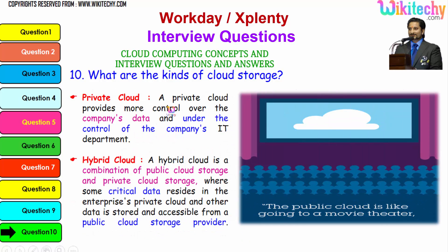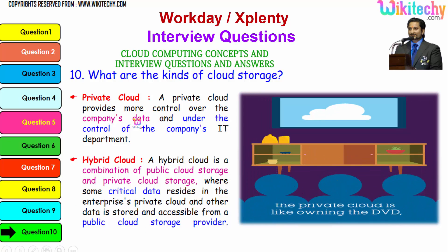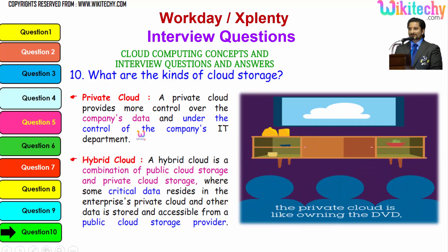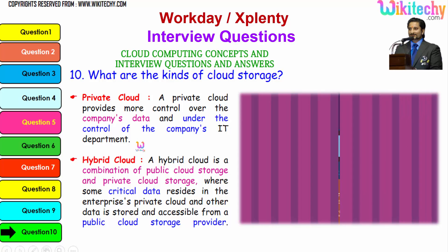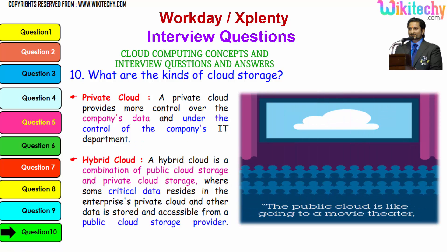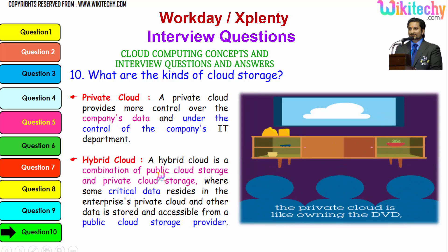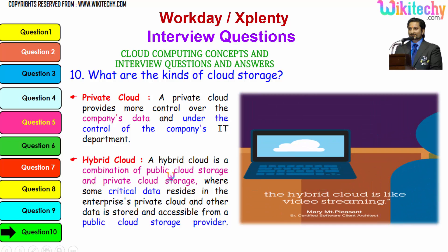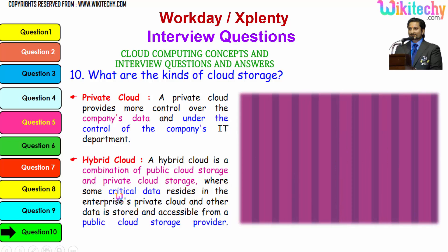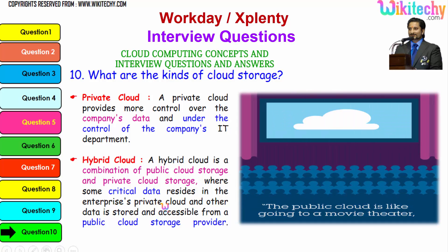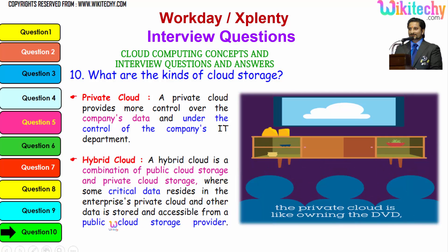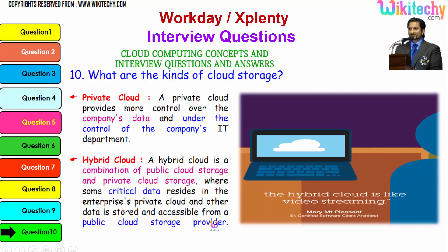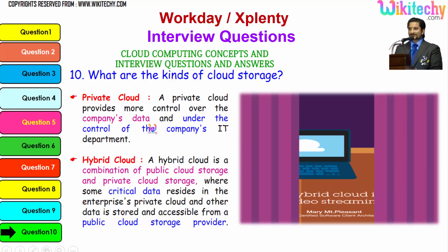A private cloud provides more control over the company's data and is under the control of the company's IT department — it's really private to you. Private cloud is like owning a DVD at home. A hybrid cloud is a combination of public and private cloud storage, where some critical data resides in the enterprise's private cloud and other data is stored and accessible from a public cloud storage provider. Hybrid cloud is like video streaming.